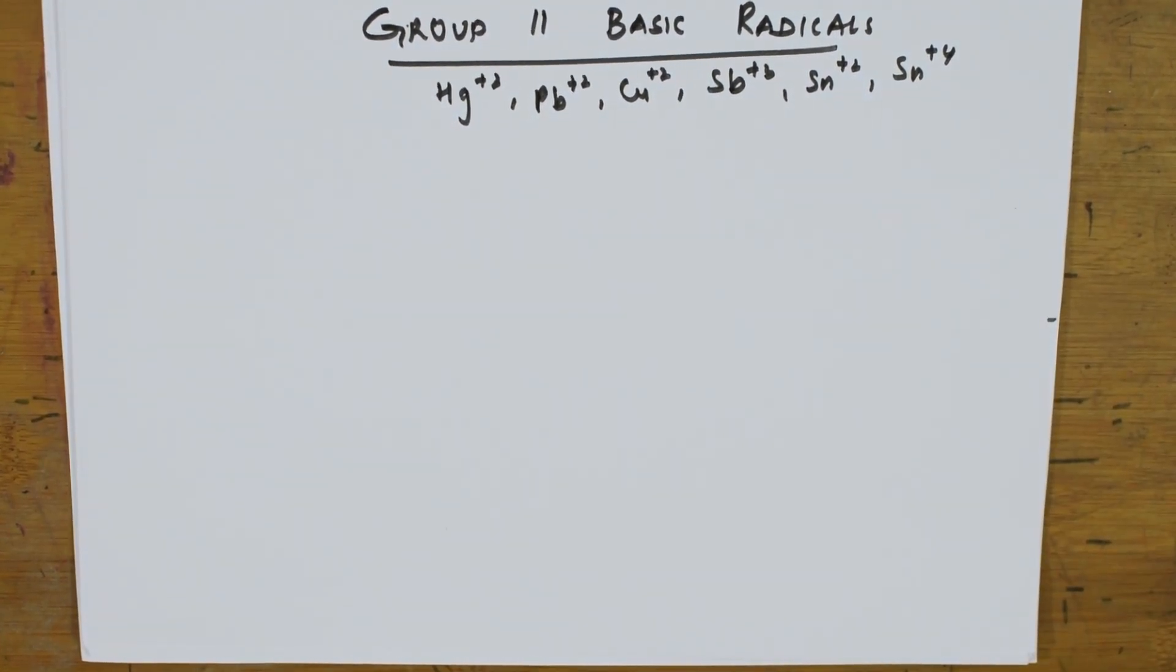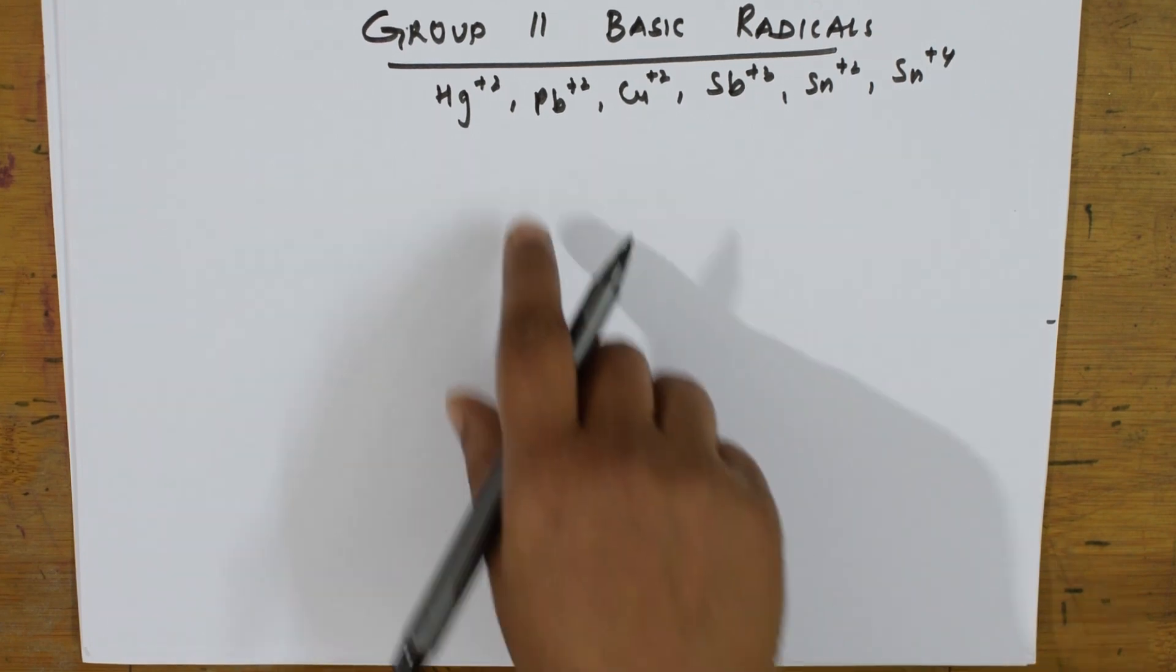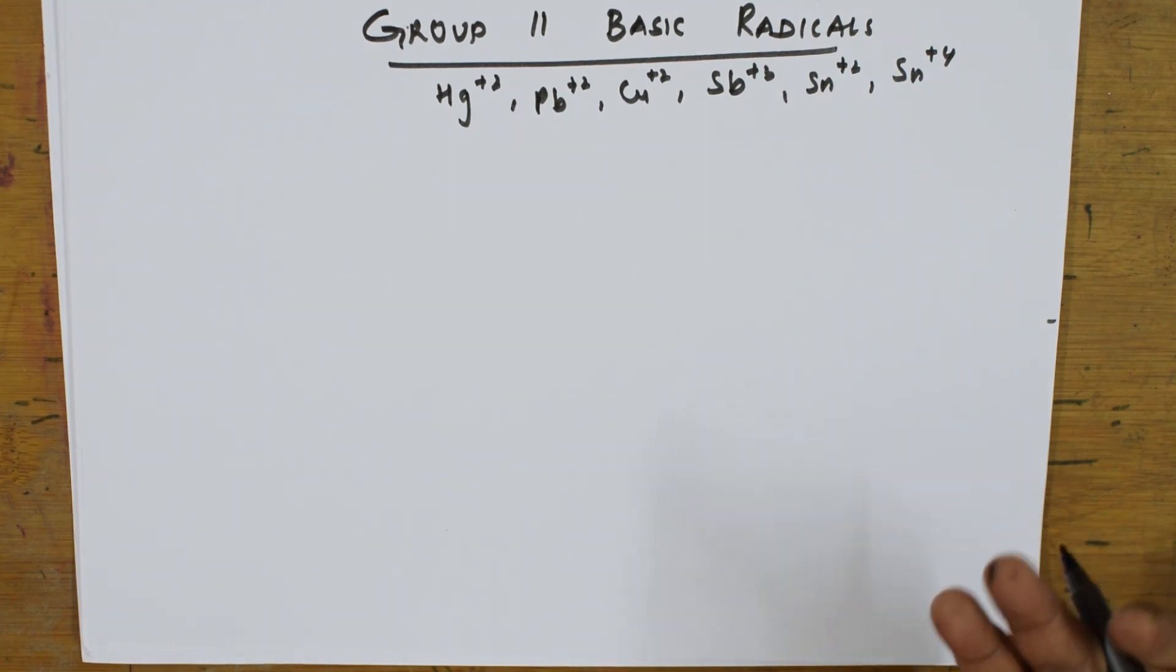Earlier, mercury and lead and silver have precipitated out as chlorides. But here, lead and mercury and all these will precipitate in the form of sulfides. Their chlorides here, sulfides.